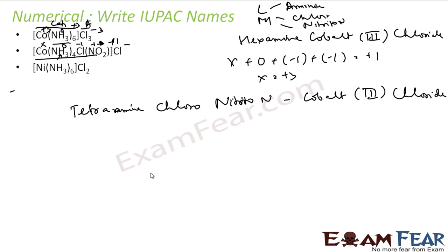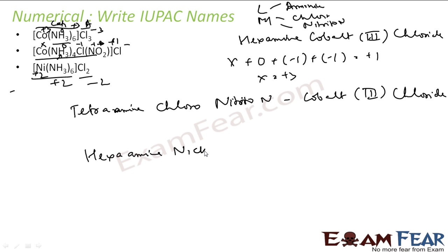Next is Ni(NH3)6Cl2. Here again, this is the cation part, this is the anion part — minus 2 charge. So the cation has to be plus 2 charge. In this case nickel will have plus 2 charge, because ammonia has 0 charge. The name: hexamine, then nickel with plus 2 charge. Then chloride — that is the name.